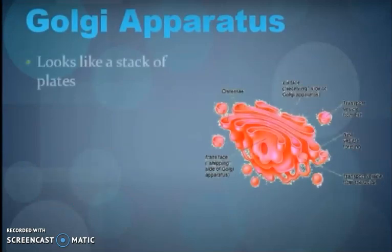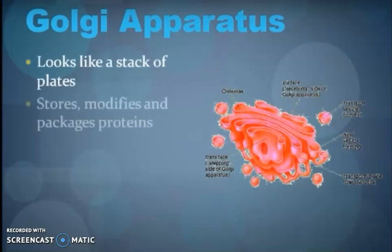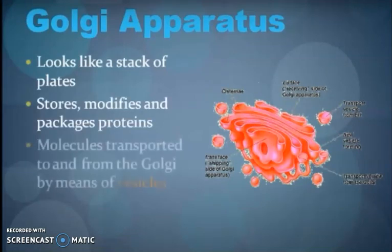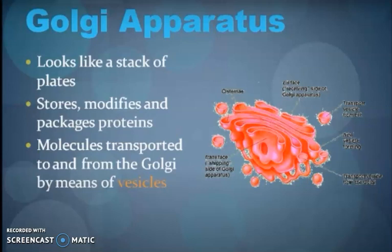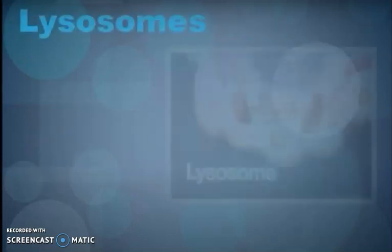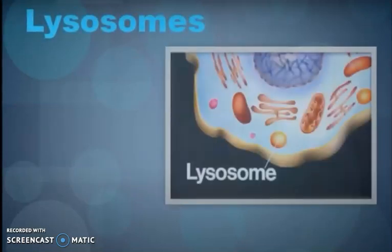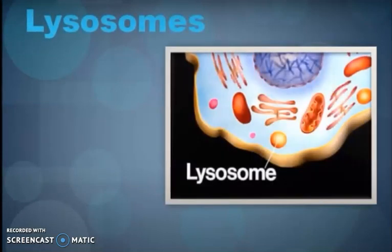The Golgi apparatus looks like a stack of plates. It stores, modifies, and packages proteins. Some molecules are transported to and from the Golgi by means of Golgi vesicles. The Golgi apparatus is also known as the Golgi complex.